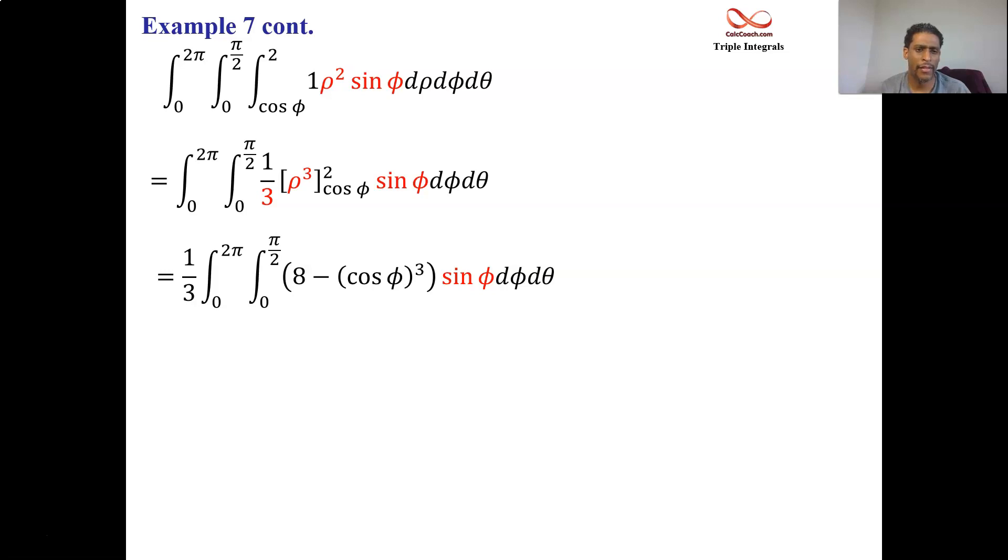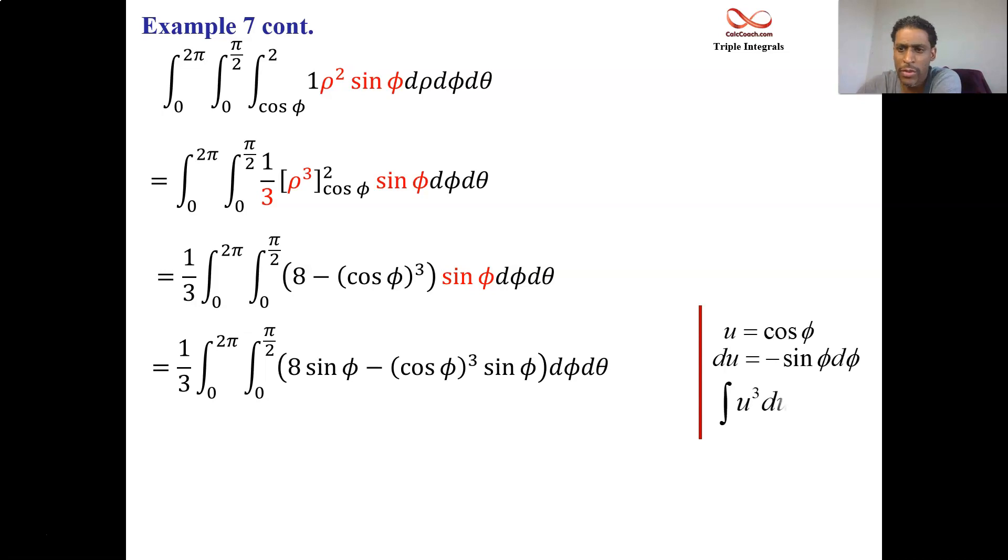We can let u be cosine phi. And then du will be negative sine phi d phi. I think what I've done here is actually distribute the sine phi across. So let me just deal with the 8 sine phi. I can integrate that. And when it comes to the cosine phi cubed times sine phi, we could do a u sub on that part. So if u is cosine phi, then du is negative 1 times sine phi d phi, multiply by negative 1. And you get the fact that negative sine phi d phi is just going to be du. So u cubed du it is. u to the fourth over 4.